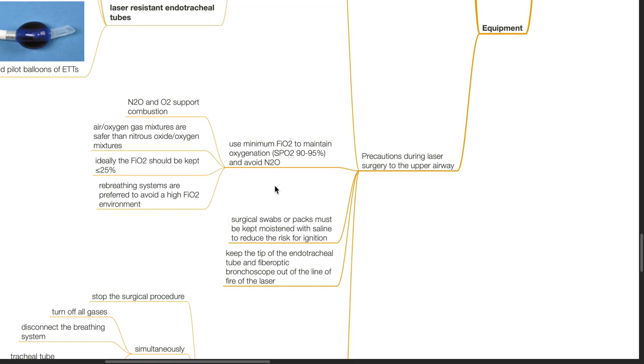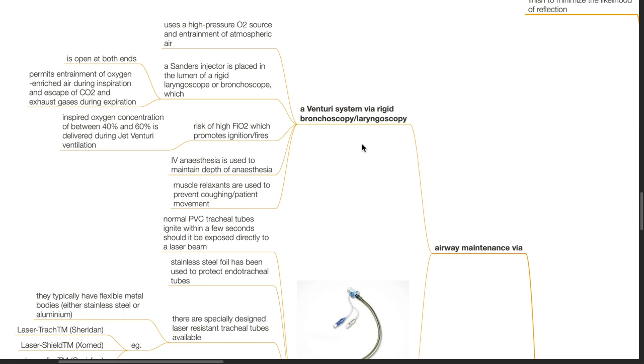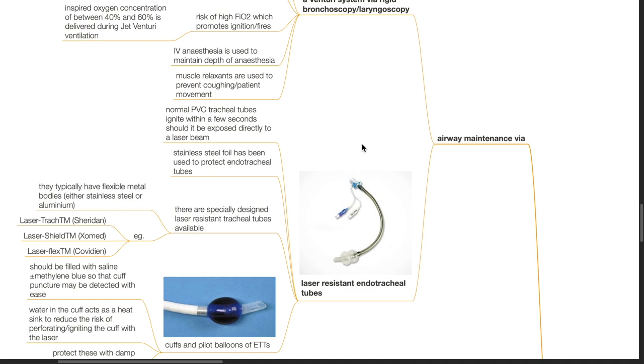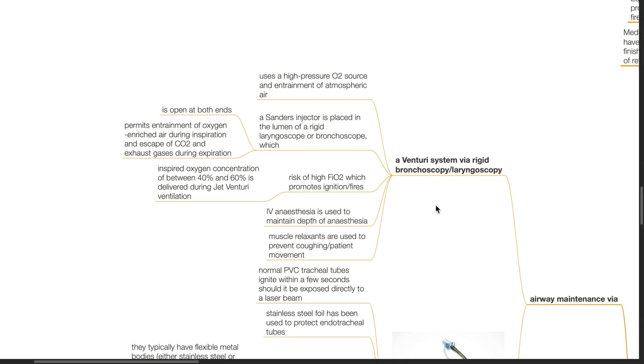Precautions during laser surgery to the airway. Airway maintenance can be either via a Venturi system via a rigid bronchoscope or laryngoscopy or via a laser-resistant endotracheal tube. A Venturi system uses a high-pressure oxygen source and entrainment of atmospheric air. A sanders injector is placed in the lumen of a rigid laryngoscope or bronchoscope which is open at both ends and permits entrainment of oxygen-enriched air during inspiration and escape of CO2 and exhaust gases during expiration. There is a risk of high FiO2 which promotes ignition and fires. Inspired oxygen concentration is between 40 and 60% when jet Venturi ventilation is employed. IV anesthesia is used to maintain depth of anesthesia. Muscle relaxants are used to prevent coughing and patient movement.